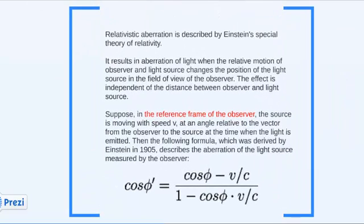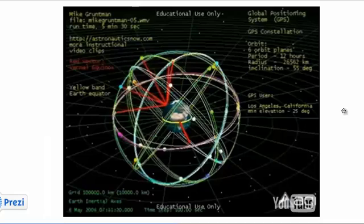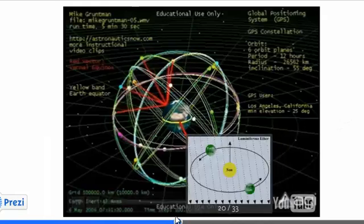Einstein came up with a different formula for aberration. But even more important, he put things in the context of the reference frame of the observer — in our case, the reference frame of the Earth. The picture here shows the GPS satellites from the perspective of the Earth inertial frame, which is an important concept in GPS technology because it's the frame in which the speed of light is the constant c. The Earth itself is rotating relative to the Earth inertial frame, and the ECI itself is rotating against the Sun.